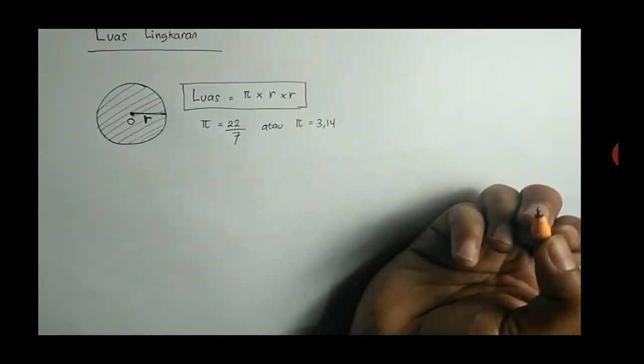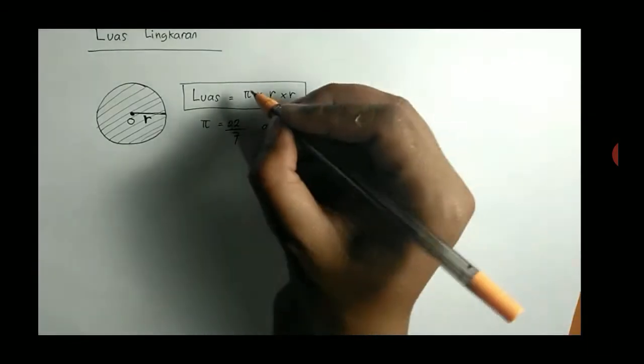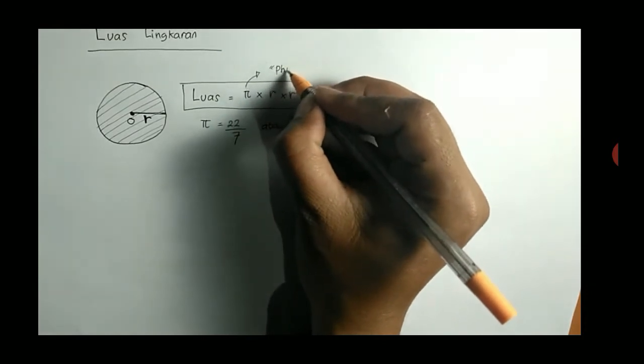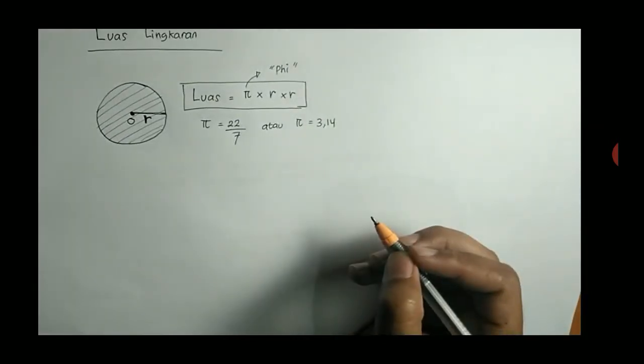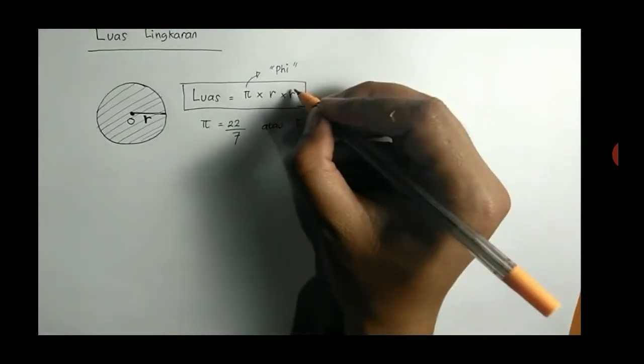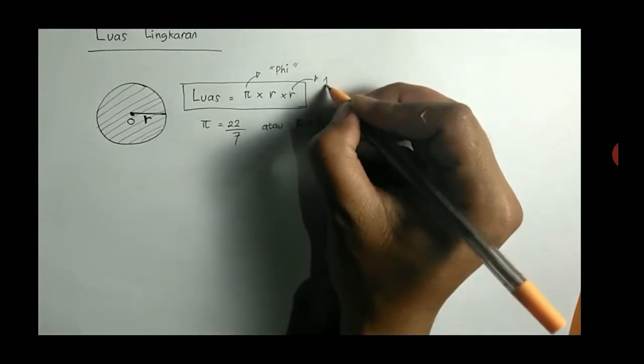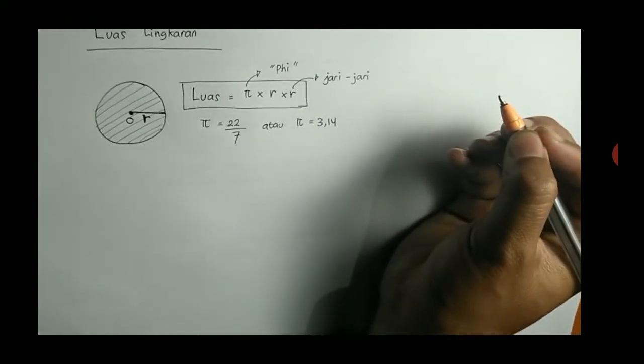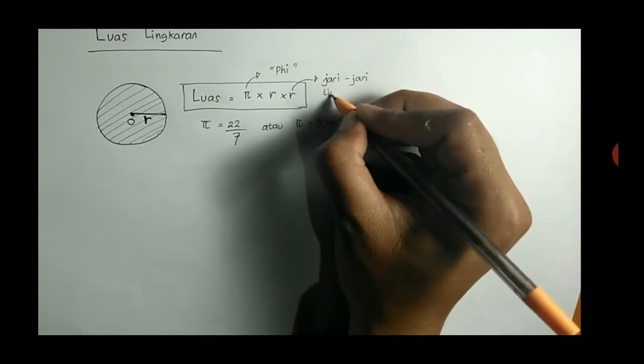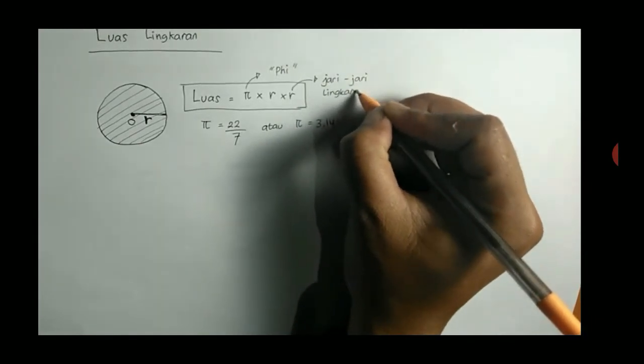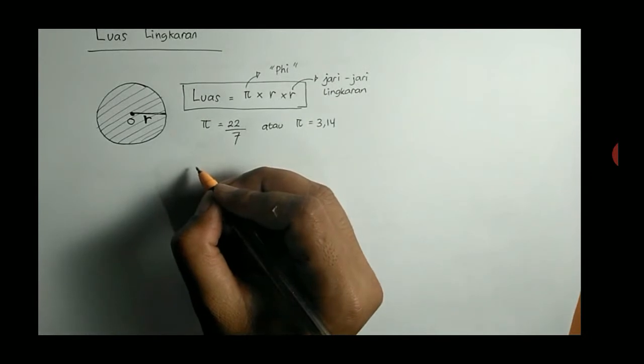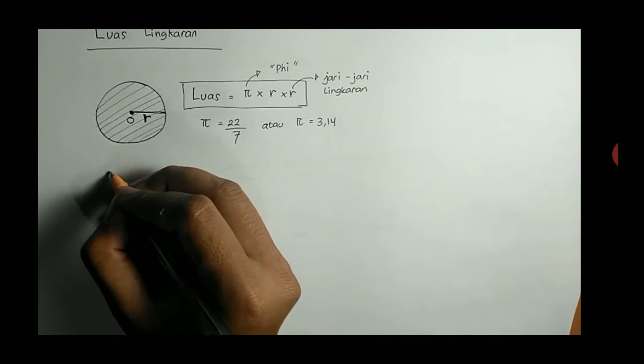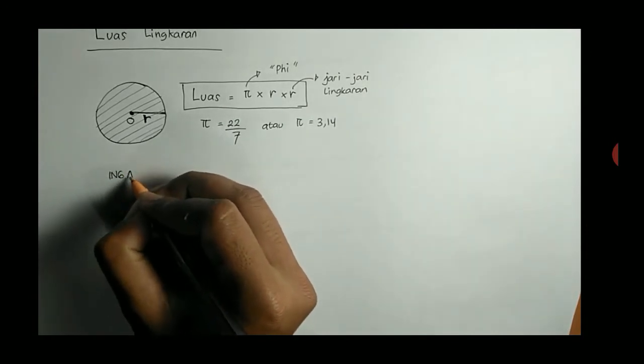Kapan kita gunakan 22 per 7? Kalau R-nya kelipatan 7 atau bisa dibagi 7. Sedangkan kalau kita gunakan 3,14 itu, kalau R-nya tidak bisa dibagi 7 atau bukan kelipatan 7. Saya ingatkan kembali, jadi R itu jari-jari. Yang perlu kalian ingat juga, kadang di soal itu, diketahuinya bukan R, tapi diameter. Saya ingatkan kembali, bahwa diameter itu 2 kali jari-jari.